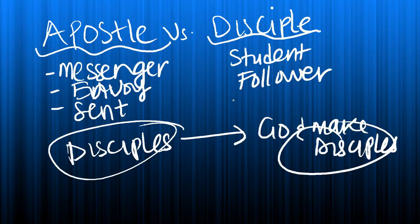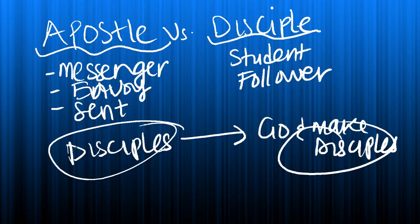The 12 apostles of Jesus, including Paul, have authority that other apostles don't have. But the basic difference between these two is that an apostle is someone who is sent. An apostle has been a disciple of Jesus first. When the apostles went through their three-year training period, Jesus sent them out and they became apostles at that time.